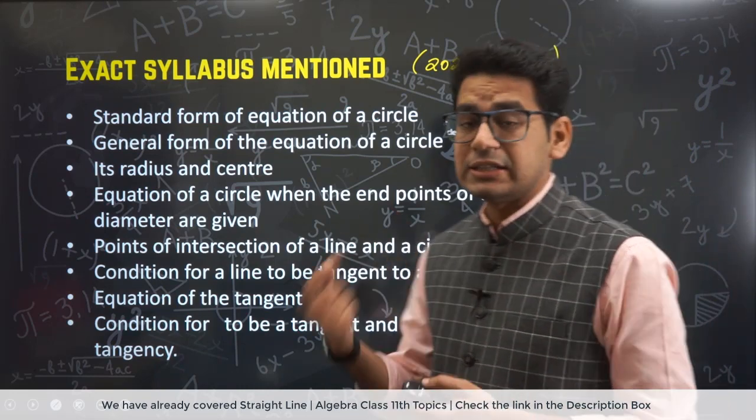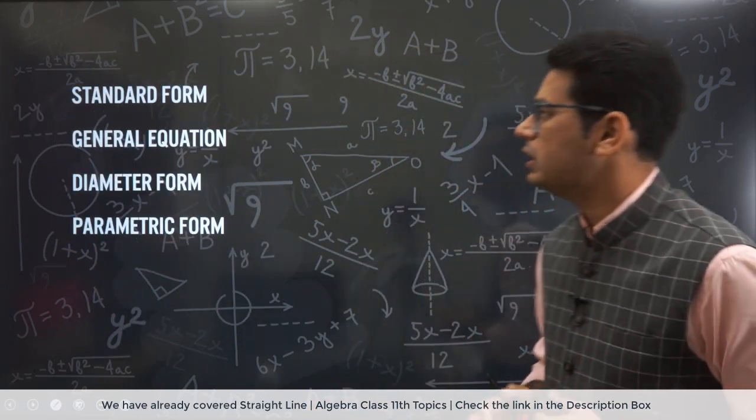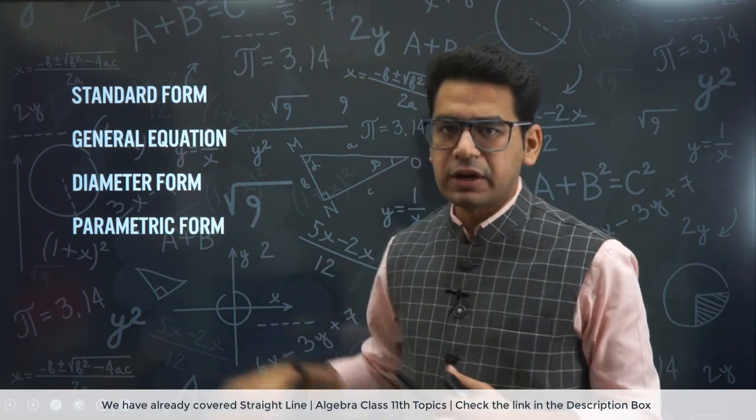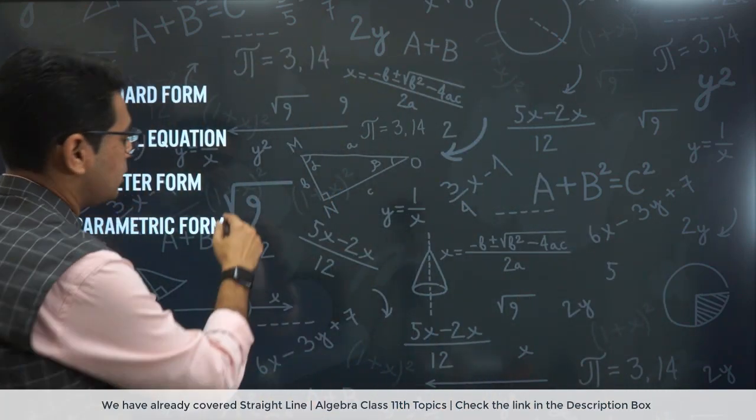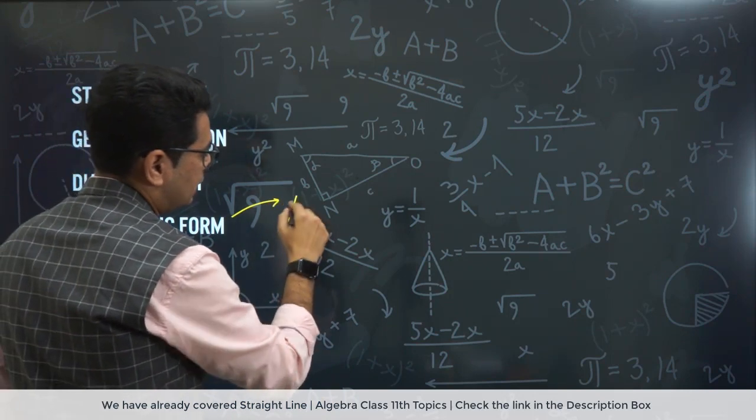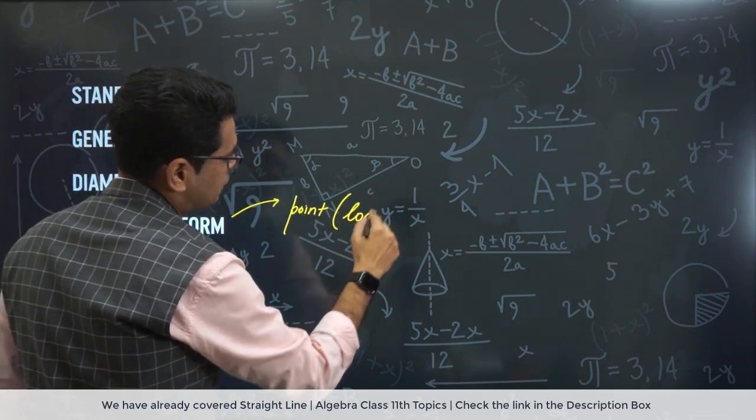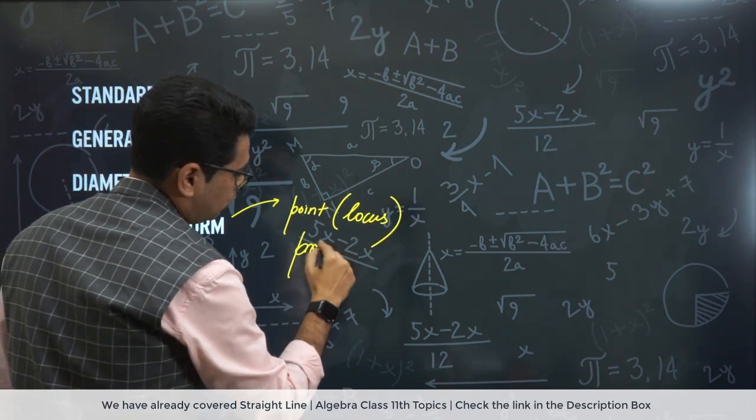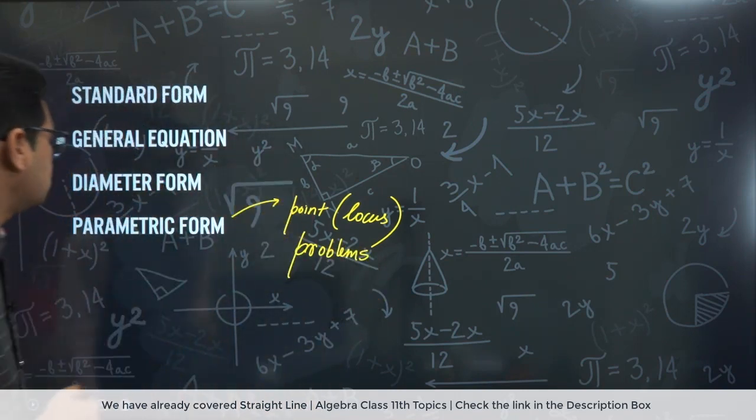So this was the exact syllabus. Let's talk about actually how much you have to do, sir. Exactly how much you have to do. So standard form, general equation, diameter form, parametric form. Parametric form is nothing but basically the parametric point. The parametric point must be known because this point is used a lot in locus questions. Locus problems, right? So I have not written it here. But locus problems are made a lot using circle, on these subtopics.